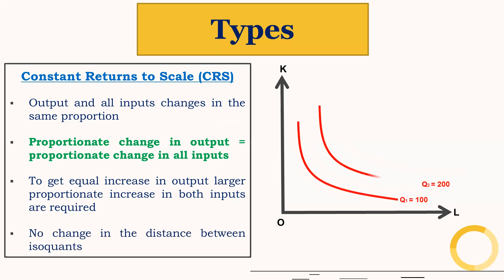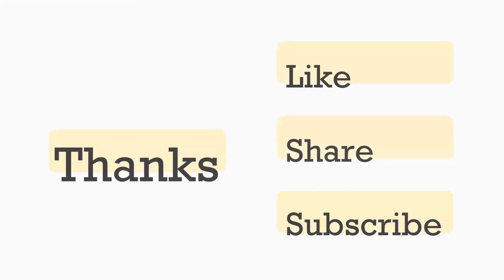Here with Q1, Q2, and Q3, the distance between Q1 and Q2 and Q2 and Q3 is the same. So in increasing returns to scale the distance is decreasing, in decreasing returns to scale the distance is increasing, and in constant returns to scale the distance remains the same. If you find this video useful, kindly like, share, and subscribe to our YouTube channel. Thank you.